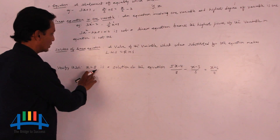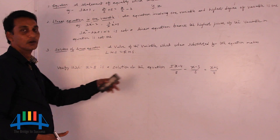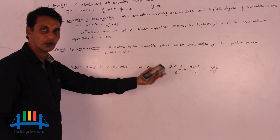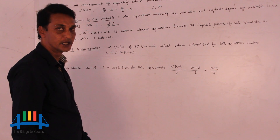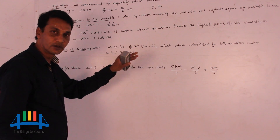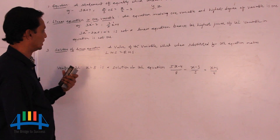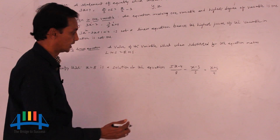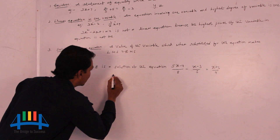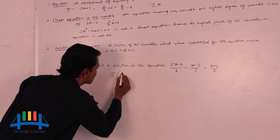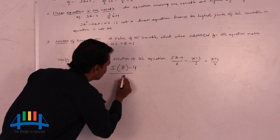Let us check whether x equals 8 is the solution of the given equation. First we will go for substitution, then simplification. After simplification, if we get confirmation that LHS equals RHS, then the given value is the solution. Now I am going to substitute the value 8 in the place of x. Just observe carefully — in place of x, I am writing 8 and going for solving.